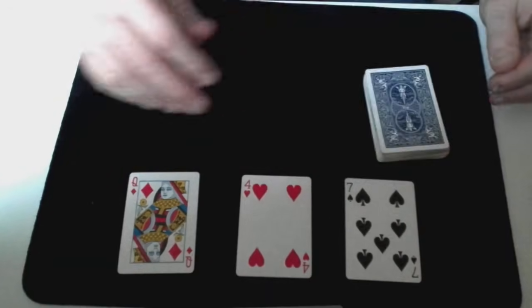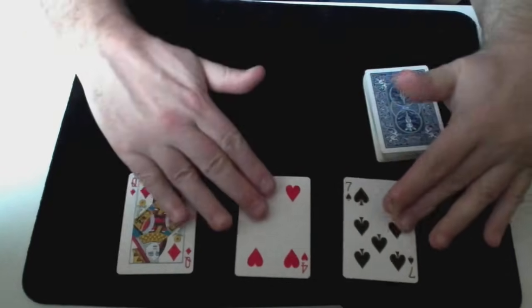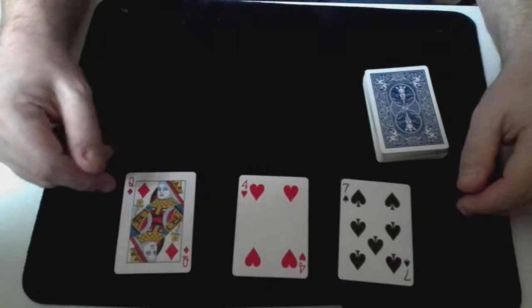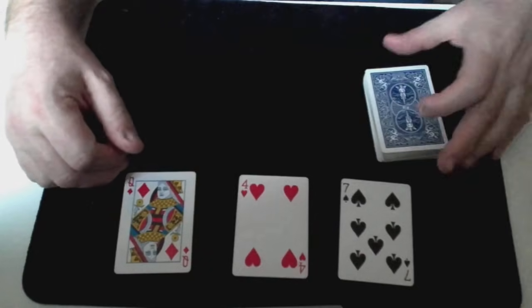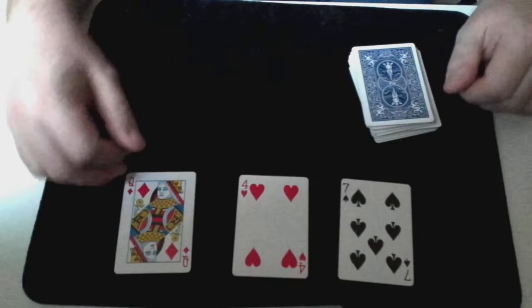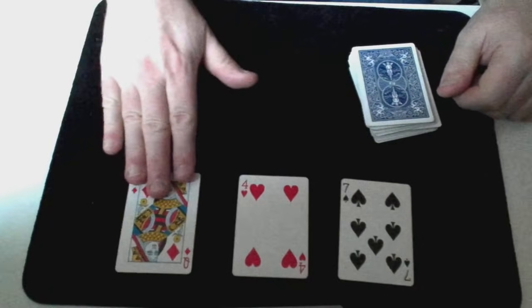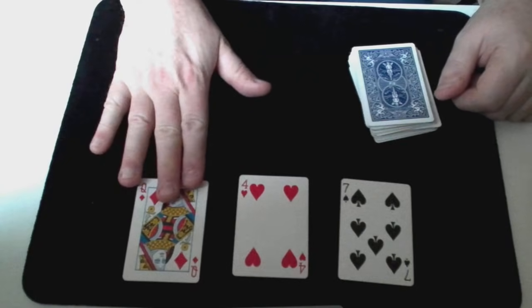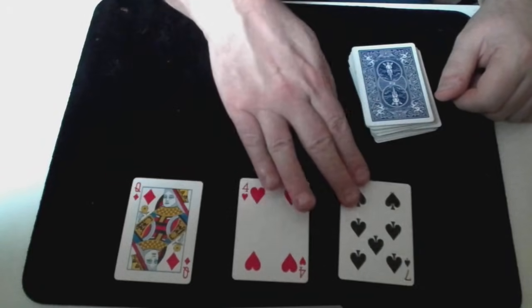So finally now back to the three cards that the spectator chose. We can now say how unlucky the spectator was not to have found the chosen card. But that maybe they have managed to choose cards that will still be able to find the card based on its position. So we then add up the value of the cards. Now of course we've already done this earlier in the trick but the spectator is unaware of this. So this time we do it out loud for the benefit of the spectator. Queen is 12 plus 4 equals 16 plus 7 equals 23.